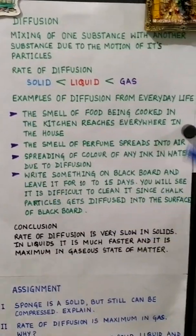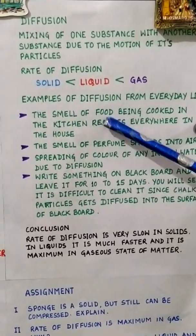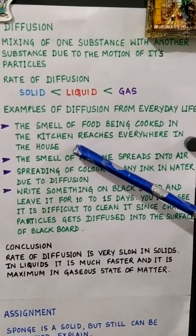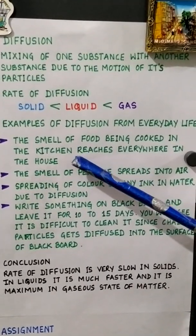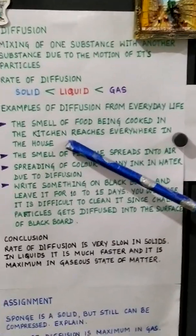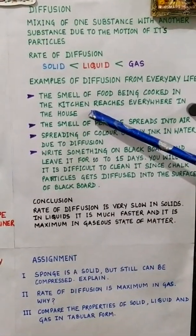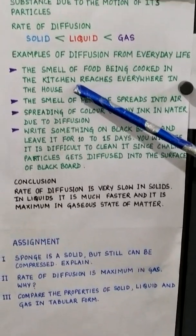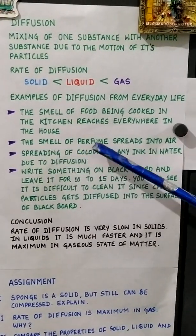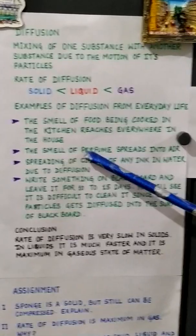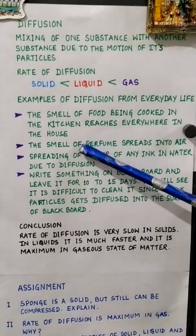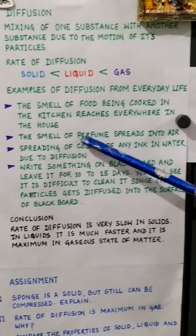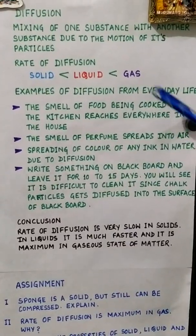Let us take some examples from daily life. The first example is the smell of food being cooked in the kitchen reaching everywhere in the house. When your mother cooks food, you can smell it from any corner of the house because the food particles intermix with the air particles — this is diffusion in gas. Similarly, the smell of perfume spreads into the air because the particles of perfume mix with the particles of air and spread everywhere.